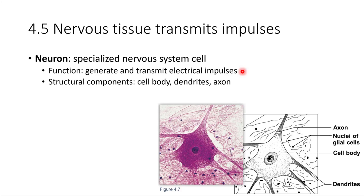In order to do this, the cells have to have three major components, and we can point to this picture down below to see them. This purpley thing that looks like it's got spider legs — this is one cell, called a neuron. This section here is the main cell body. We can see the nucleus right here, and coming off of this cell body, we have other projections. These projections are the things that allow signals to be received and sent by this cell.